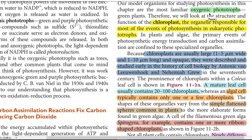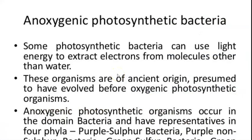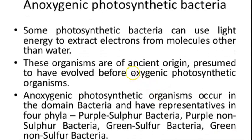Simple examples are cyanobacteria and plant systems. There is another term called anoxygenic photosynthesis. Anoxygenic photosynthesis refers to a process in which oxygen is not evolved. These organisms extract their energy and electron source from some other source other than water - especially they are extracted from hydrogen sulfide. These organisms are of an ancient origin, presumed to have evolved before the oxygenic photosynthetic organisms.